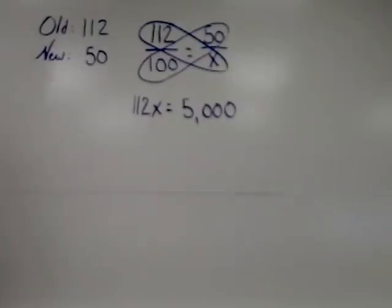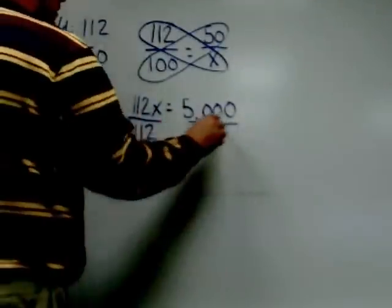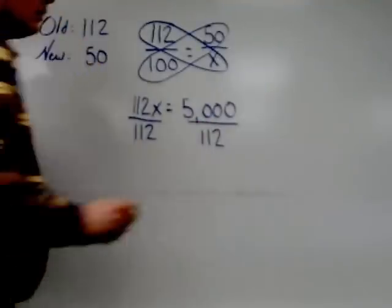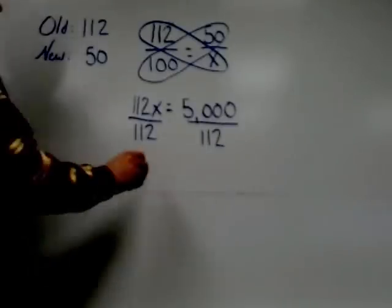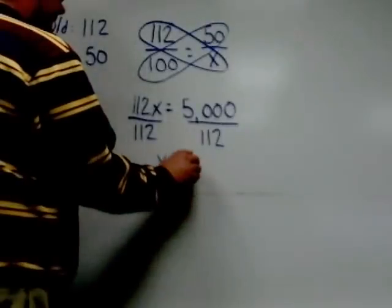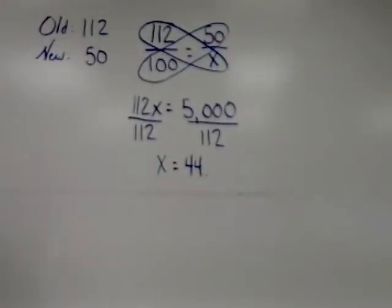Now to solve for x we have to divide by 112. And when I take 5000 and divide by 112 we obtain a result of 44.64.